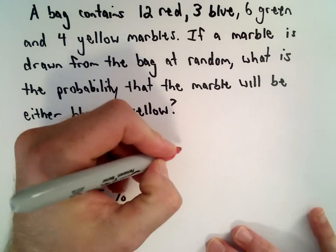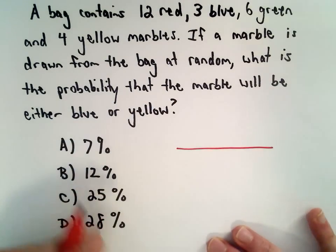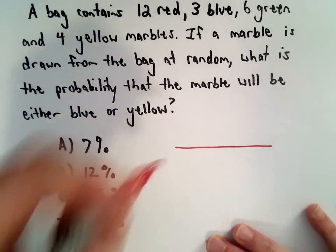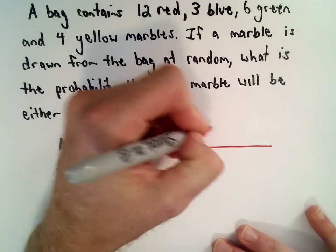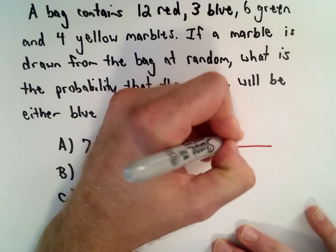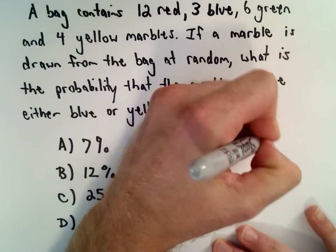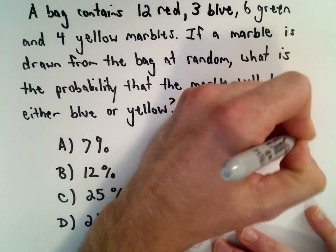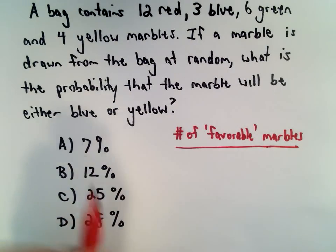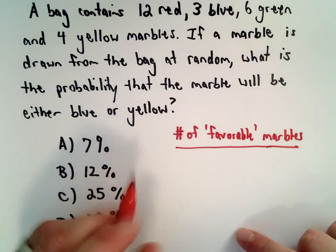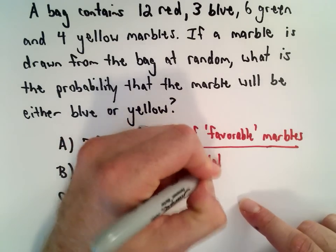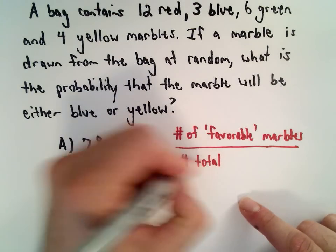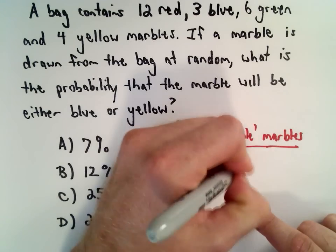The basic formula you need to use to calculate the probability here is we're going to count the number of favorable marbles. By favorable, I mean we want it to be blue or yellow, and we simply divide that by the total number of marbles.